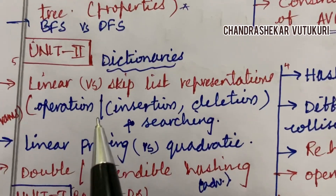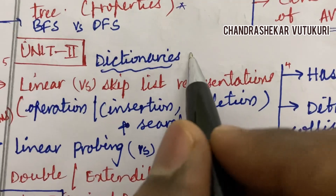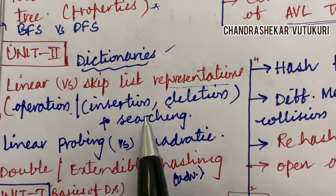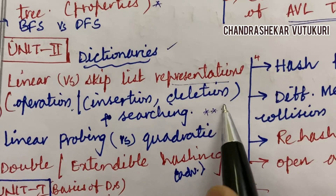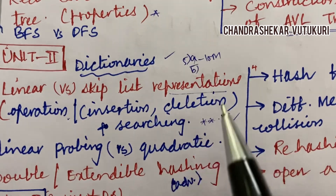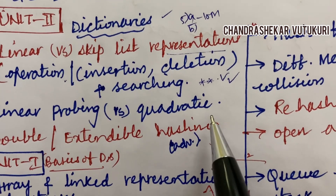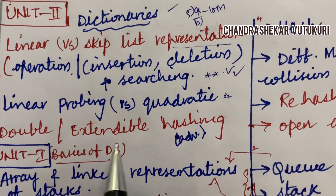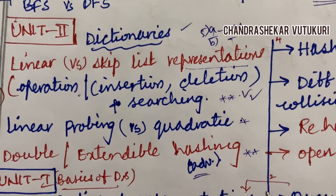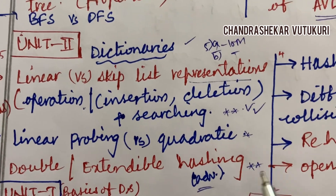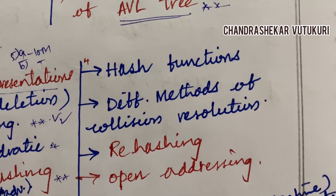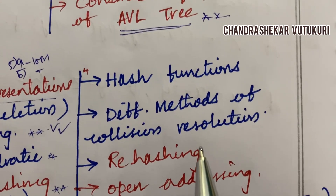The second unit is all about programs — it covers dictionaries, linear versus skip list representations, and operations related to insertion, deletion, and searching. Programs related to these are said to be the topmost and sometimes direct 10-mark questions. Linear probing versus quadratic probing is a short question. Double hashing as well as extendable hashing is also said to be a long question which may occur in Part B, and their advantages are said to be a topmost short question. Programs related to each and every concept you are supposed to work out. Without programs and algorithms from certain units you are unable to clear this course.